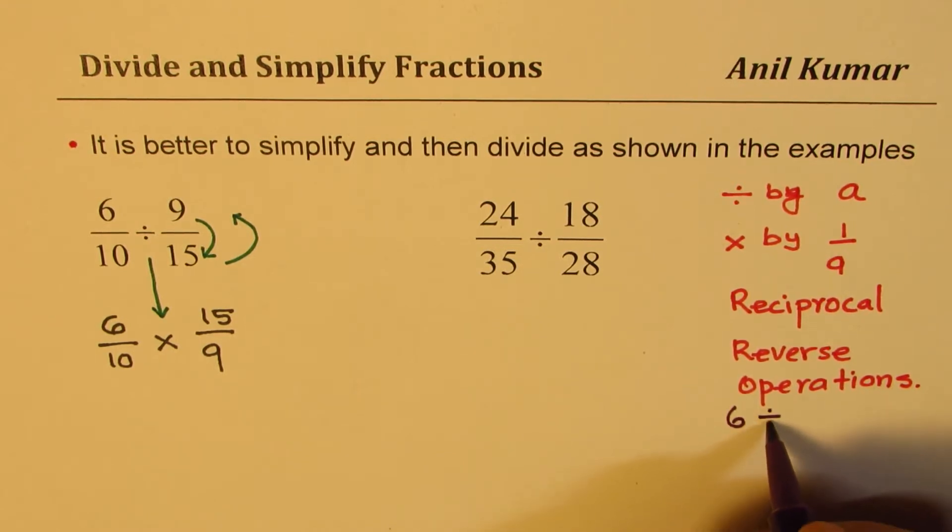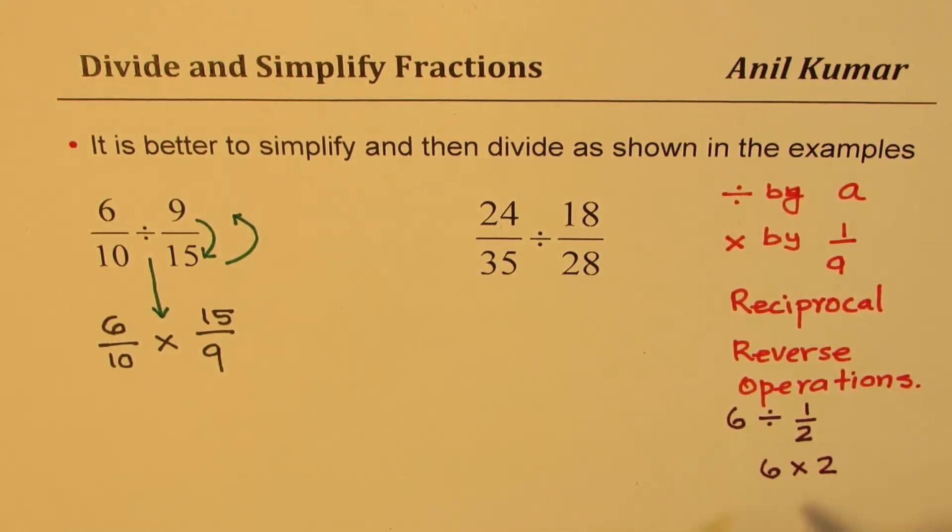It is same as 6 multiplied by 2. So when you divide by half, you actually get 12, which you also get when you multiply 6 by 2: 12.